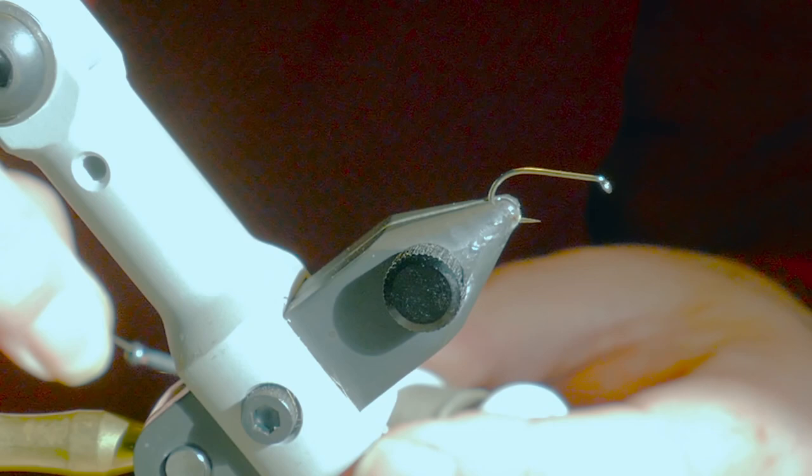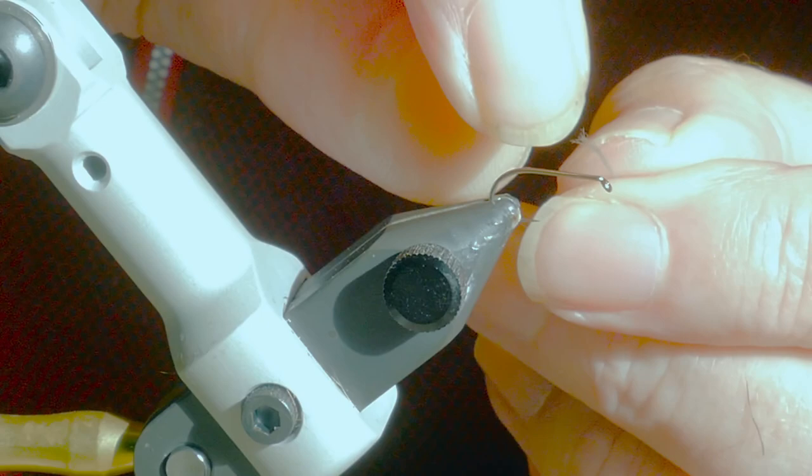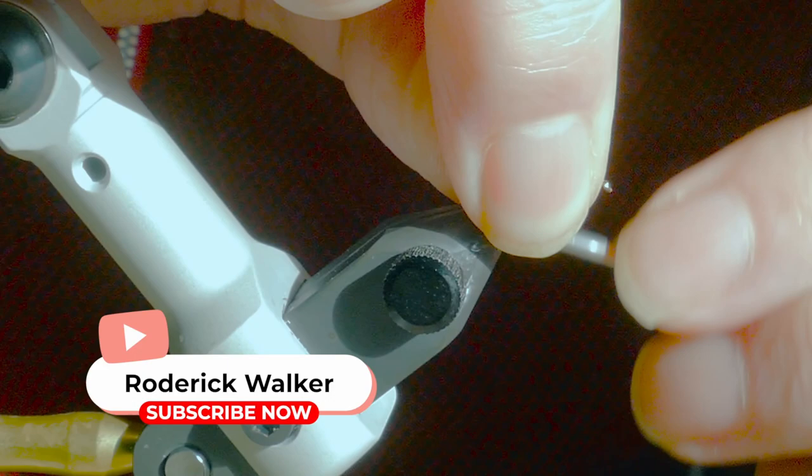The tying thread I'm using isn't important. I'm actually using some micro floss in blue dun coloration. I'll just start it off at the eye.